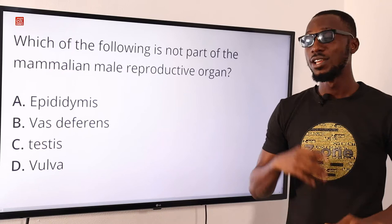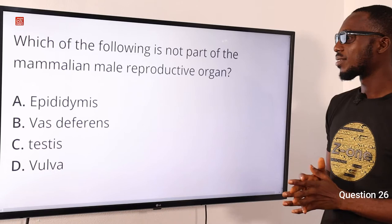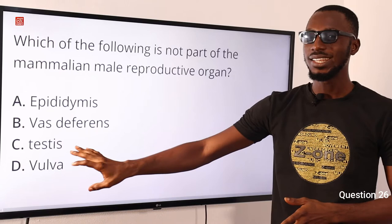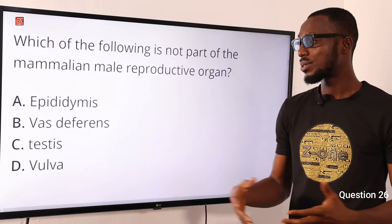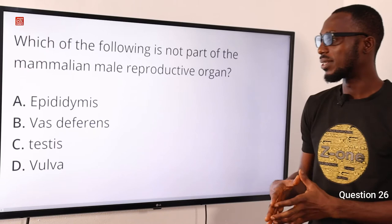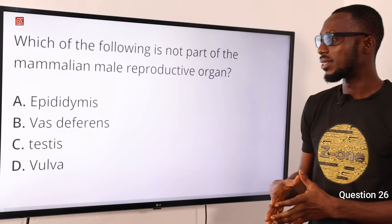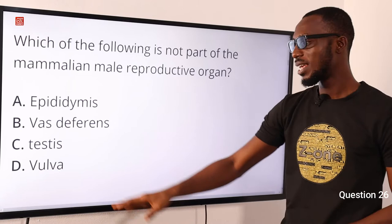Question 26: Which of the following is not part of the mammalian male reproductive organ or system? Options A, B, and C are for the male. The vulva is the external opening for the female. When you talk about the testes, that is where sperm production occurs. From the testes there is a linkage through the seminiferous tubule, then to the epididymis, then to the vas deferens, and then into the urethra. All of that points to the male reproductive system; the vulva (option D) is for the female — so option D is the correct answer.